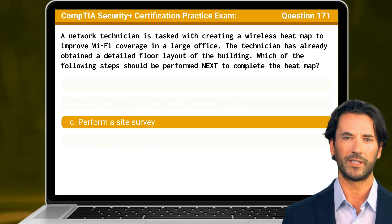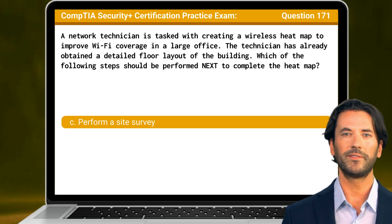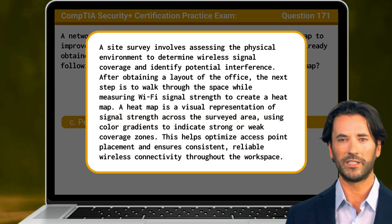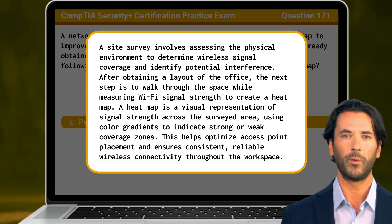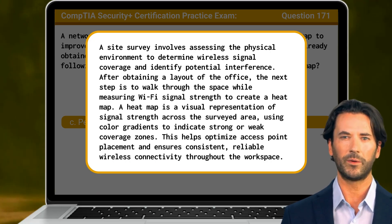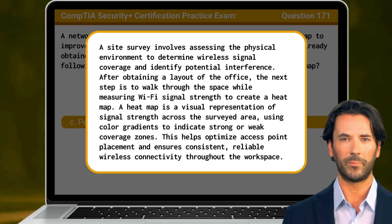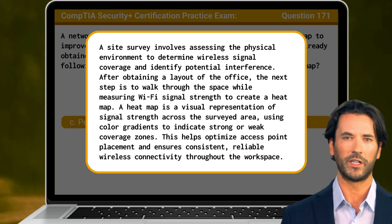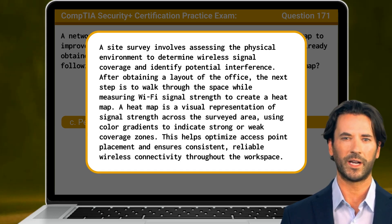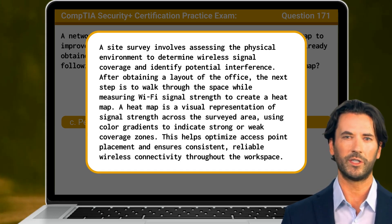The answer is C: perform a site survey. A site survey involves assessing the physical environment to determine wireless signal coverage and identify potential interference. After obtaining a layout of the office, the next step is to walk through the space while measuring Wi-Fi signal strength to create a heat map — a visual representation of signal strength across the surveyed area using color gradients to indicate strong or weak coverage zones. This helps optimize access point placement and ensures consistent, reliable wireless connectivity throughout the workspace.